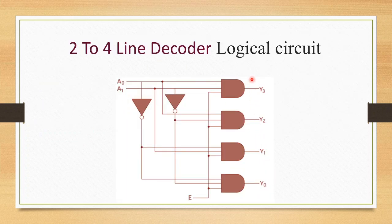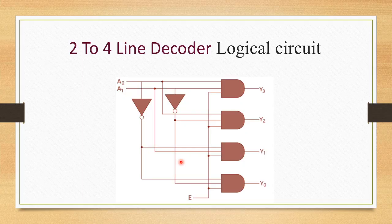This is the logic diagram for the 2-to-4 line decoder, using enable E, inputs A0 and A1. Y0, Y1, Y2, and Y3 are implemented using AND gates with the appropriate complemented or uncomplemented inputs. For example, Y2 = E · A1 · A0', Y1 = E · A1' · A0, and Y0 = E · A1' · A0'.